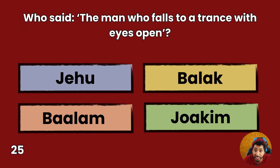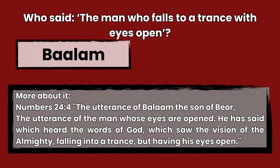Question 25: Who said, 'The man who falls into a trance with eyes open'? Jehu, Balak, Balaam, or Joachim? Answer: Balaam. Numbers 24:4 — The utterance of Balaam, the son of Baor, the utterance of the man whose eyes are opened, who heard the words of God, which saw the vision of the Almighty, falling into a trance, but having his eyes open.